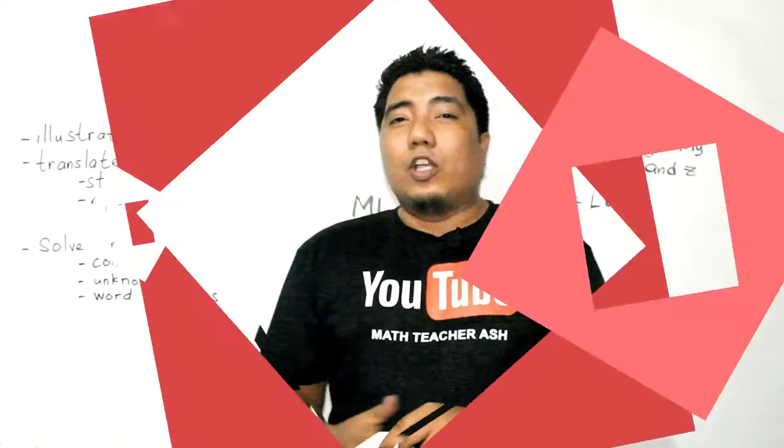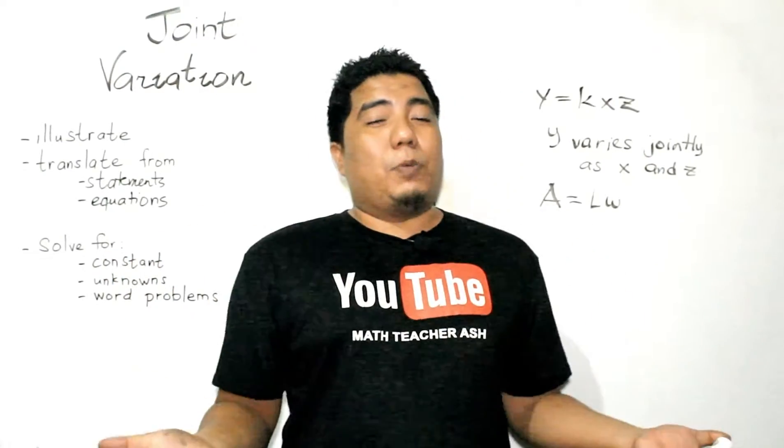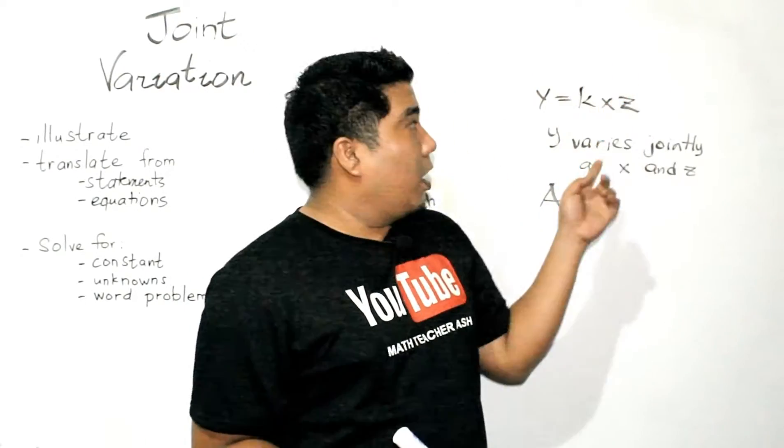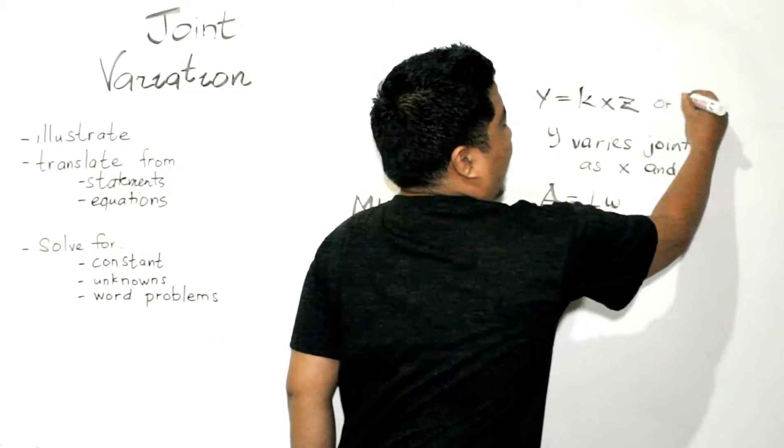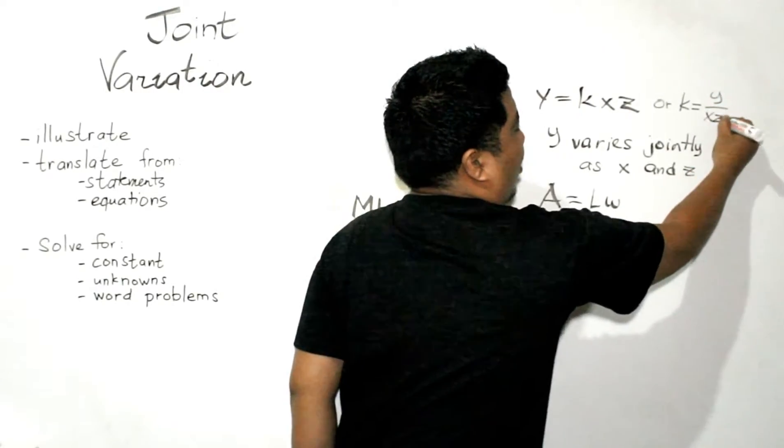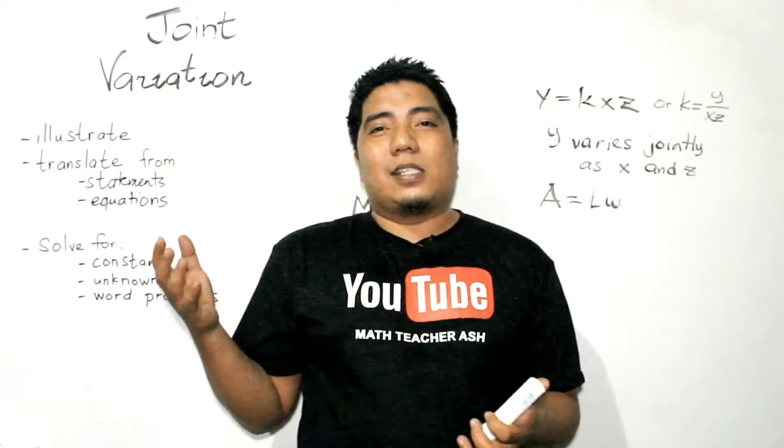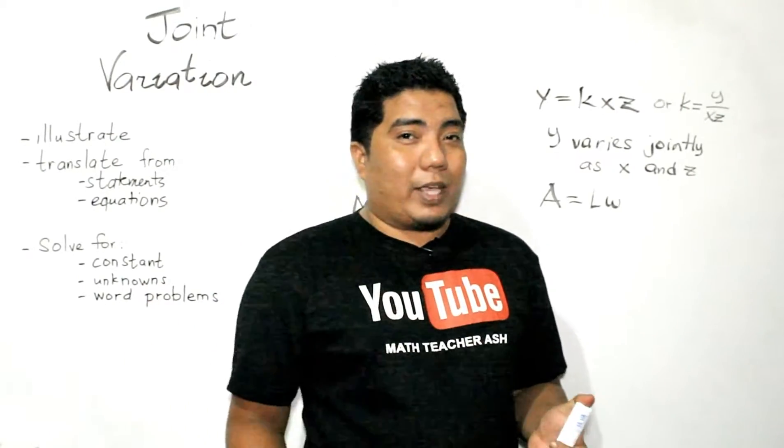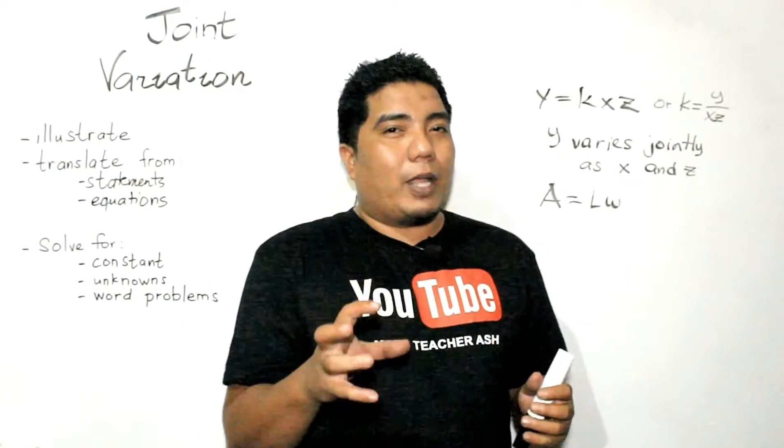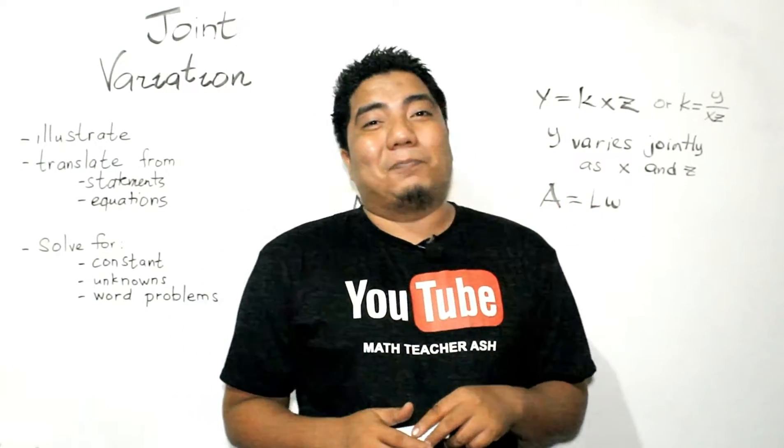So, how do we solve joint variations? Now, let us go on solving variation. How do we solve the constant, the unknowns, and word problems involving joint variation? First, the constant. If this is your equation, the constant is solved by just getting your y, then divide it to the product of your x and z. The same as the concept in the direct variation, the constant is acquired when y is divided by x. But since there is a z now, x and z will be multiplied first, and then the product will be used as a divisor to your y quantity.